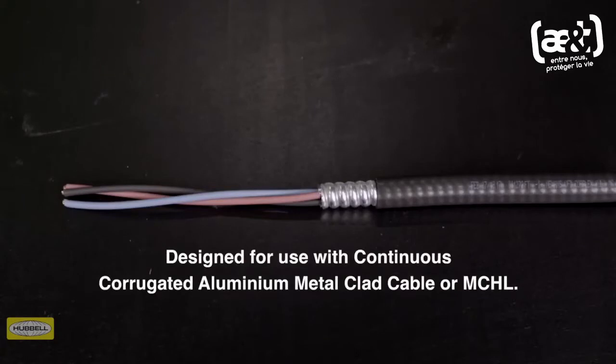This dual-certified cable gland is designed for use with continuous corrugated aluminum metal clad cable or MCHL. Assembly instructions are provided with all HAWC cable glands or can be downloaded via the HAWC website.